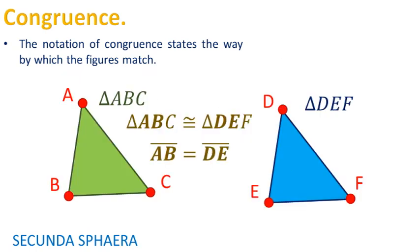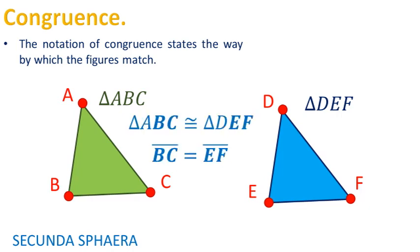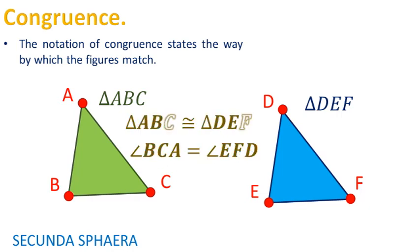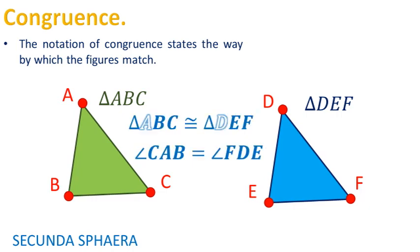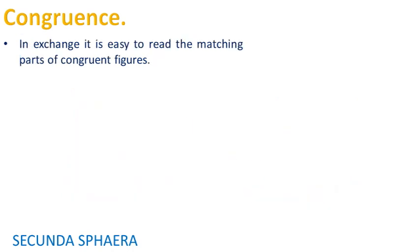Each pair of consecutive letters must denote corresponding sides of the figures, and each triplet of consecutive letters must name corresponding angles of the figures. A perk from the rules of the notation of congruence is that it easily gives a lot of information of congruent figures.